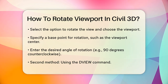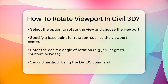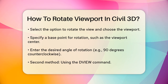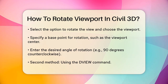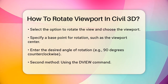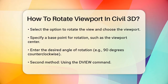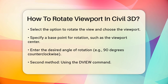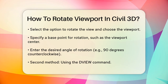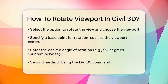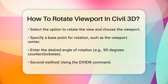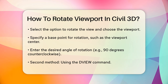Another method is using the DView command. To use this, double-click inside the viewport you want to rotate to activate it. Then type DVIEW and press Enter. This command will ask you which objects you want to rotate. You can select all objects by typing All and pressing Enter.